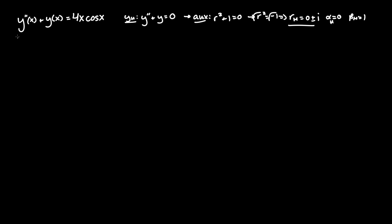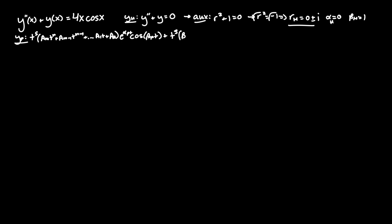Now that we know r_h, let's move on to y_particular. Since we have a cosine term, the general format is t^s times a decreasing polynomial of degree m: (a_m·t^m + a_{m-1}·t^{m-1} + ... + a₁t + a₀)·e^{α_p·t}·cos(β_p·t), plus the same polynomial with b coefficients times e^{α_p·t}·sin(β_p·t).